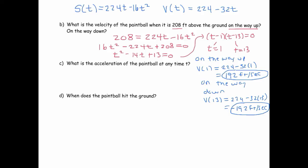What's the acceleration of the paintball at any time t? Well, acceleration is the rate of change of velocity. So our acceleration is the derivative of velocity. So our acceleration is going to be negative 32 because the derivative of 224 is 0. The derivative of negative 32t is negative 32. And that makes sense because that is the acceleration due to gravity.